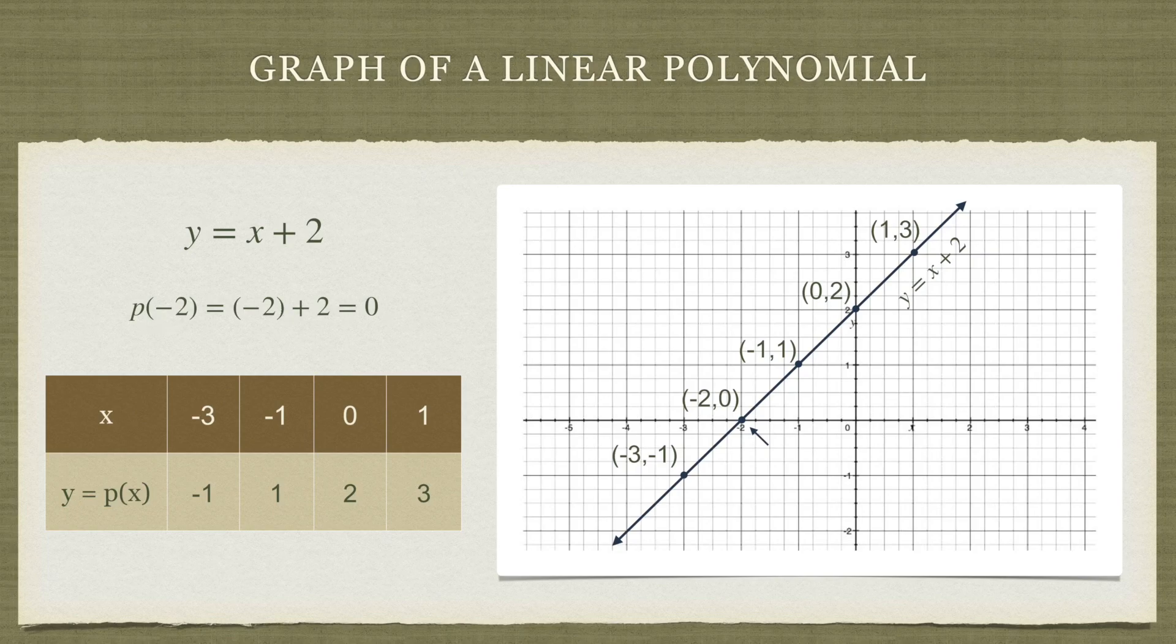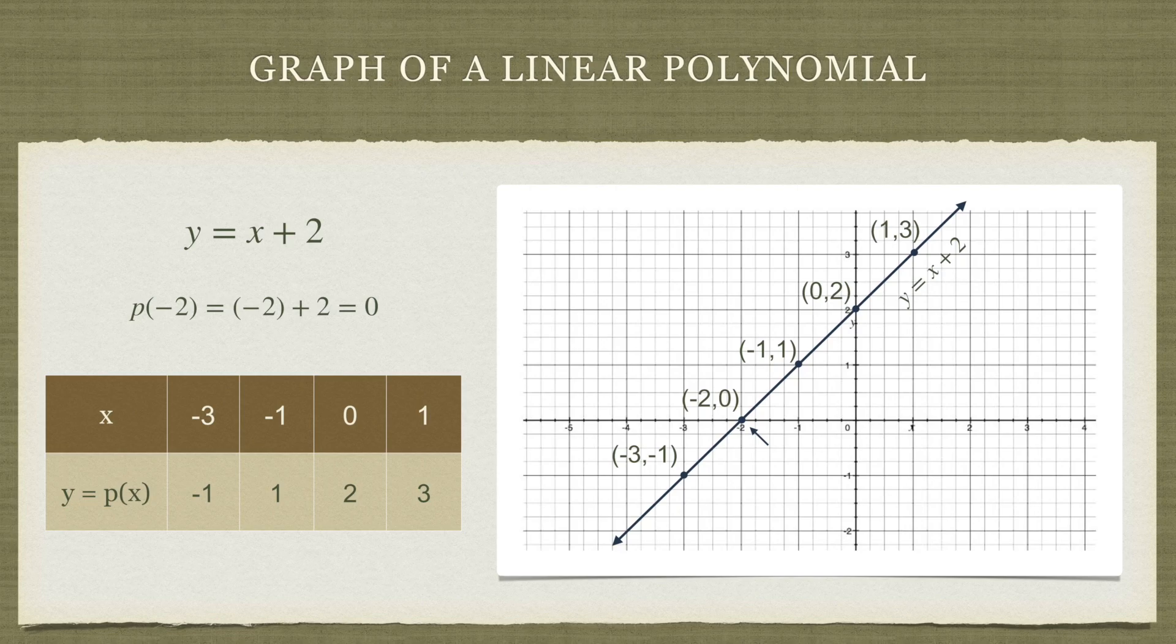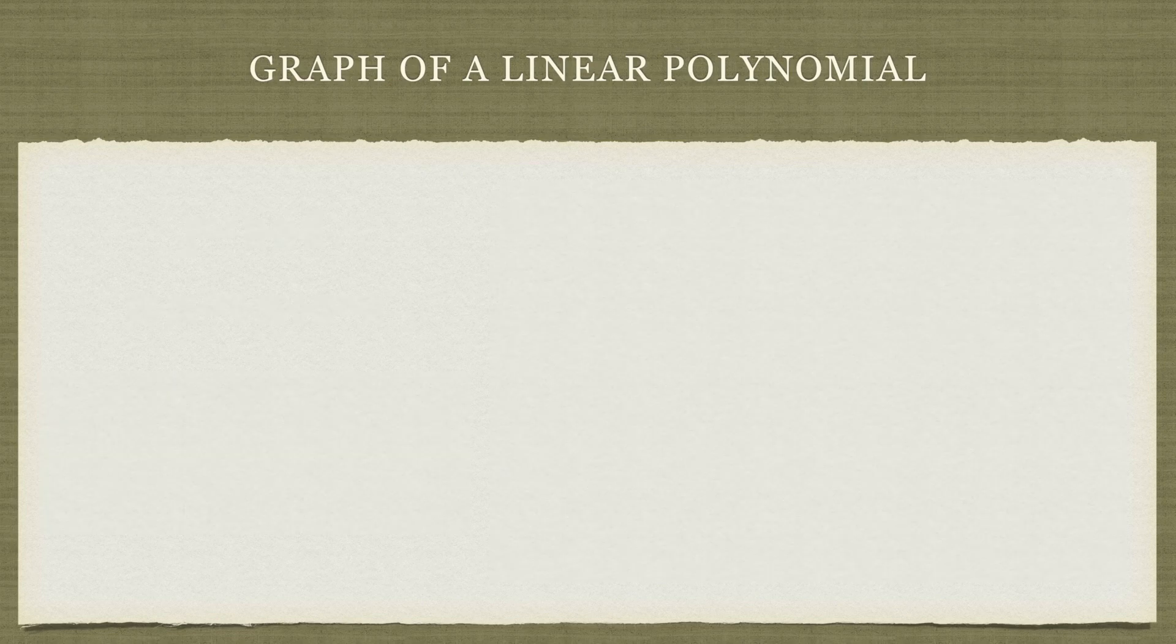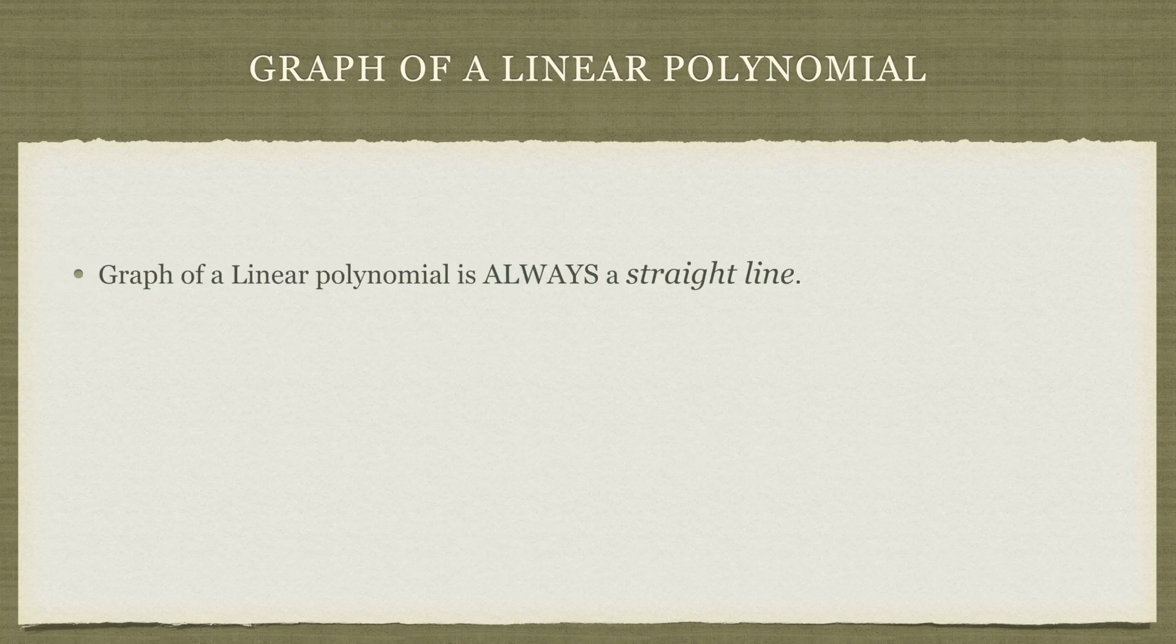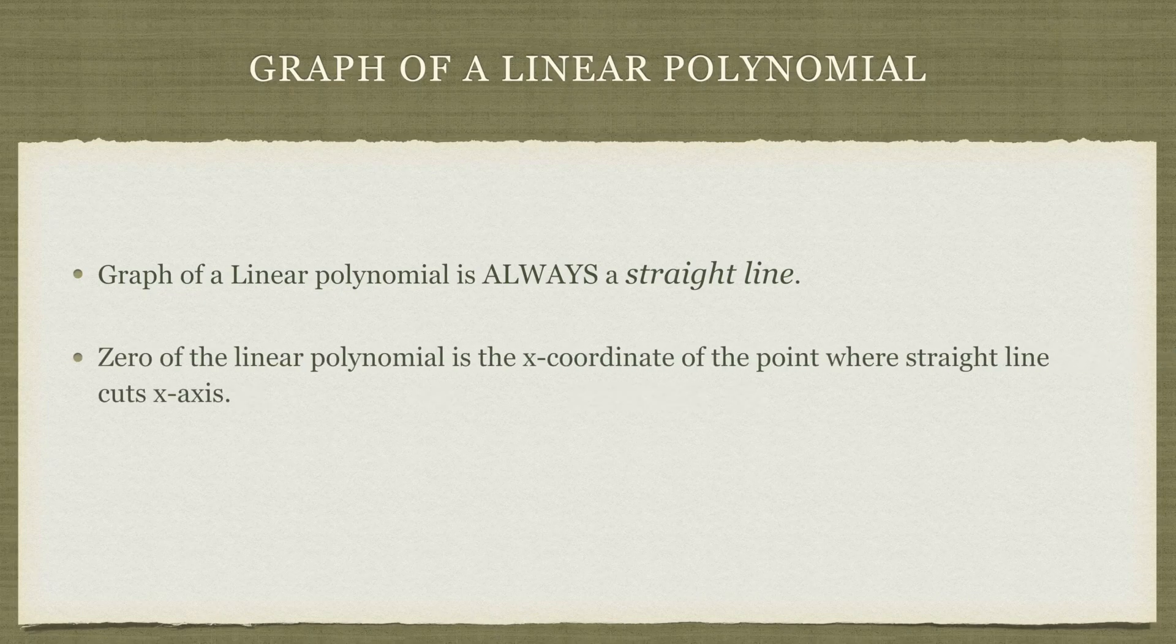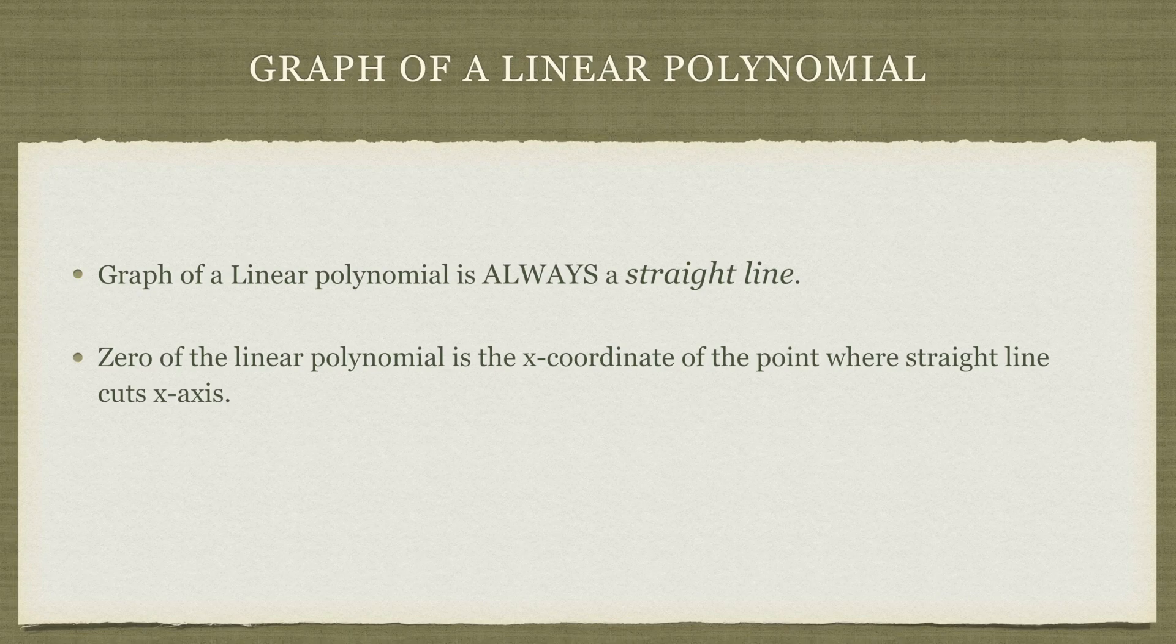So two quick points about the graph of a linear polynomial. This is true for all linear polynomials. The graph of any linear polynomial is always, always, always a straight line. And number two, the zero of the linear polynomial is going to be the x coordinate of the point where that straight line intersects the x-axis.